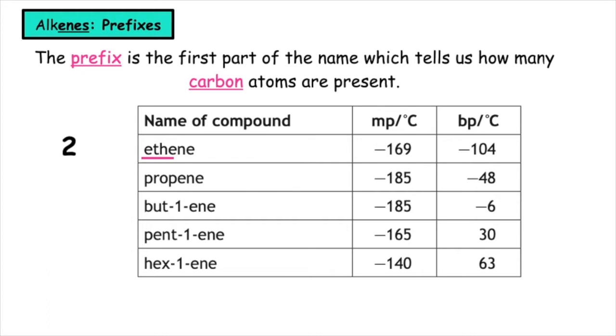Eth tells us there's two carbons. Prop, three. Bute, four. Pent, five. And hex, six.